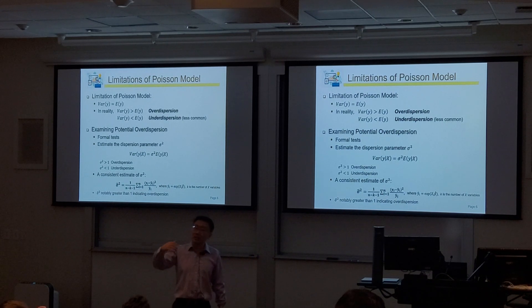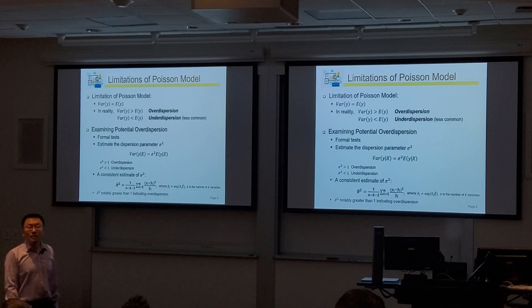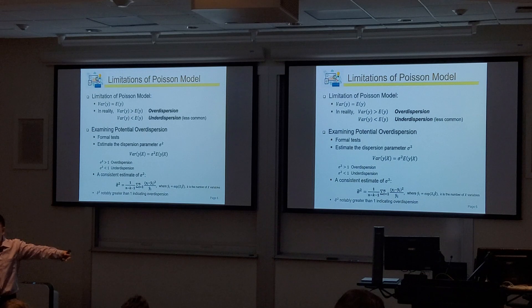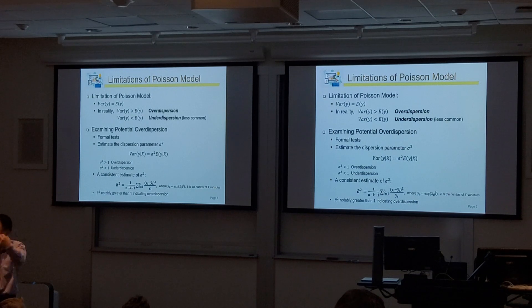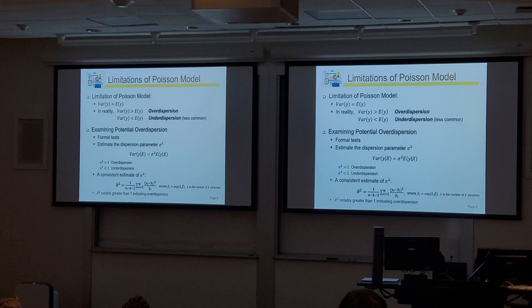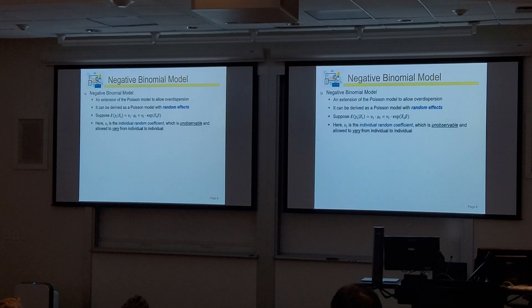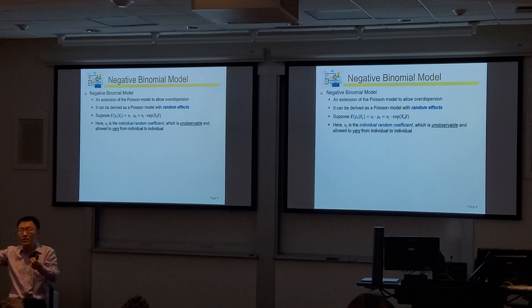If the model has over-dispersion, how can we account for that? Your dependent count variable has more variance than the expected value — more variance than can be explained by the Poisson distribution. The idea is through so-called random effects. We allow each observation to have additional individual random effects — additional random noise beyond the basic Poisson distribution.